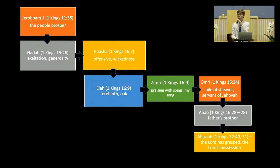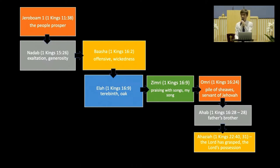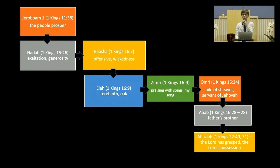When Zimri took over the throne, how long did he reign? Seven days. In the end he was destroyed by his own doing while trying to burn down the palace. The house fell on him and he died because Omri was coming for him.